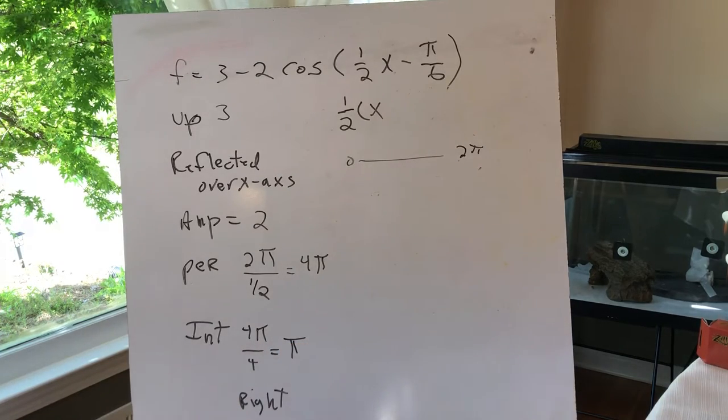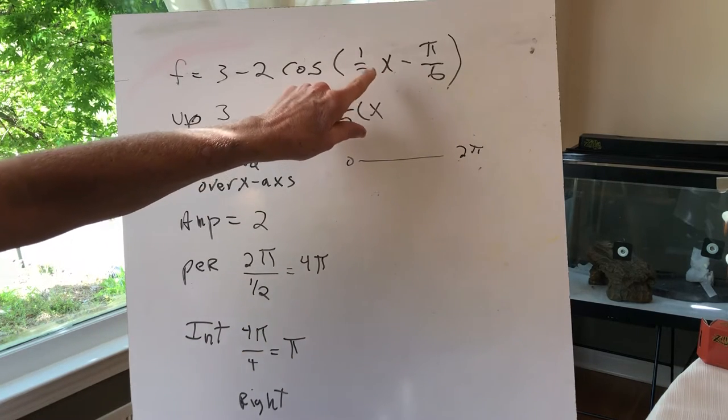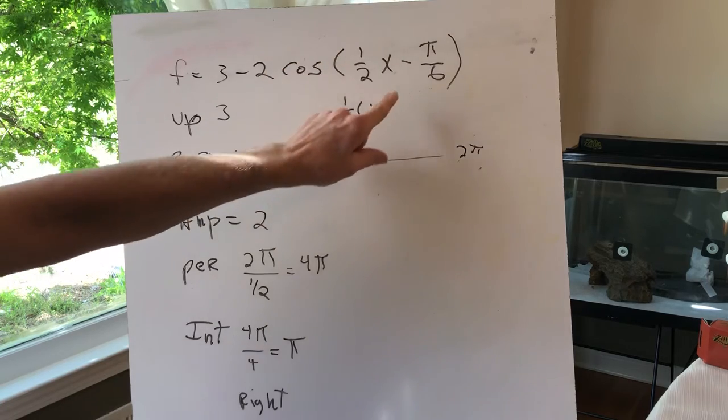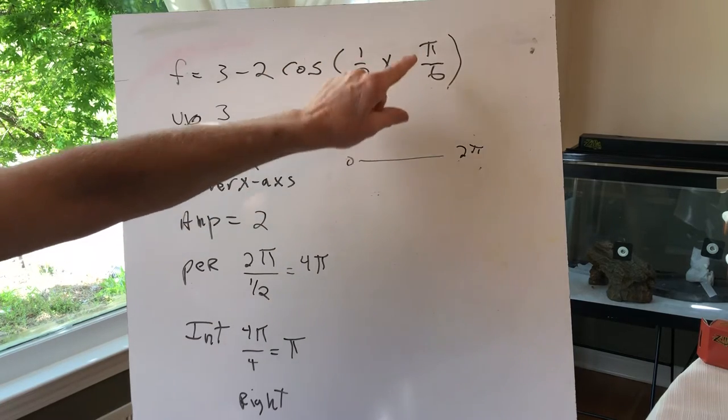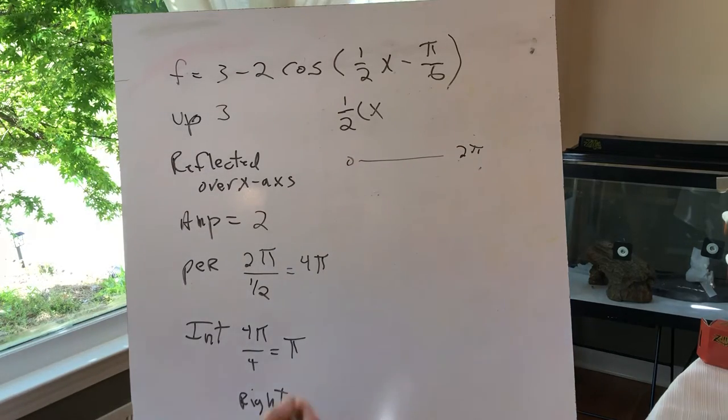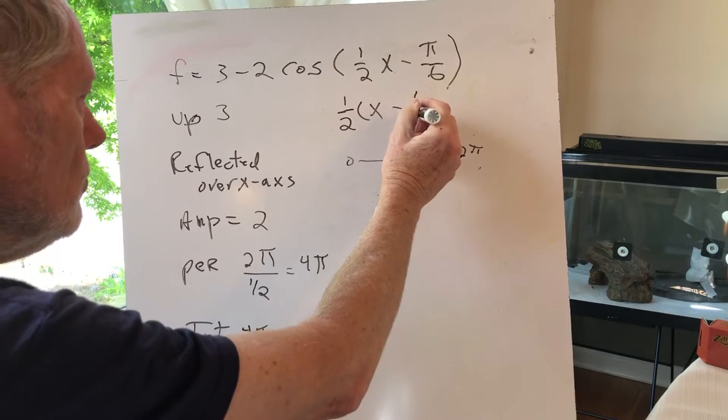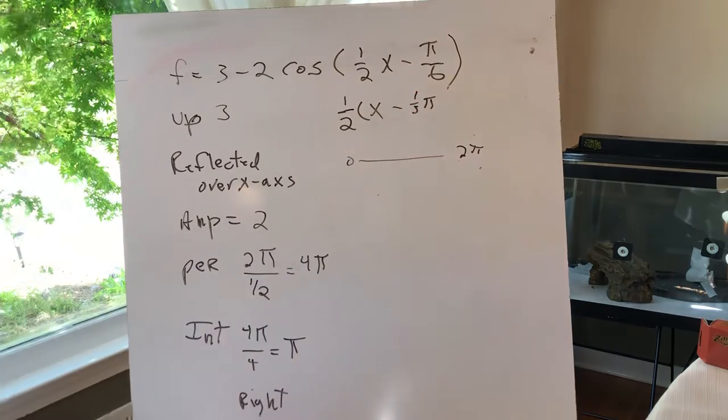Now the shift left or right. We have to factor out the coefficient of x, so bring 1/2 out, that leaves x, and divide π/6 by 1/2. On your calculator, π/6 divided by 1/2 is π/3, then add the π back in.